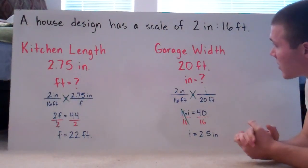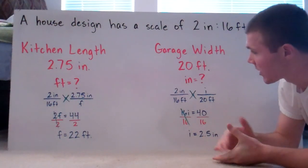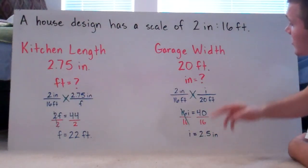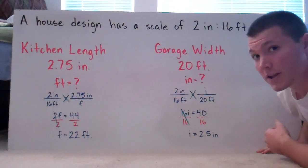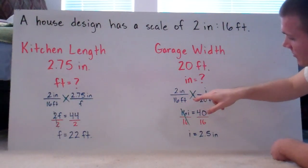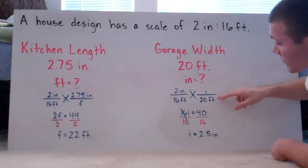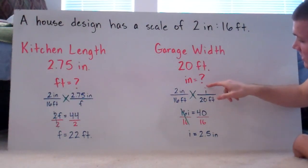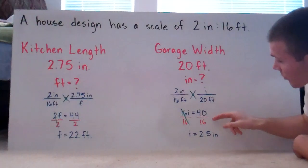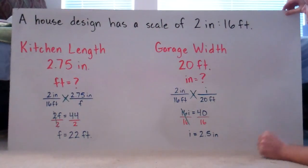On the same drawing, let's say a garage is 20 feet wide, and we need to draw it correctly on the scale drawing. Our ratio is two inches over 16 feet, set equal to i (inches) over 20 feet. Cross multiplying: 16 times i is 16i, and 2 times 20 is 40. Dividing both sides by 16, i equals 2.5 inches, or two and a half inches.